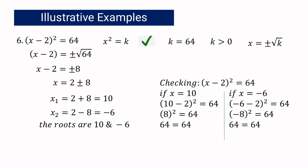Let us check each solution using the original equation, quantity x minus 2 squared equals 64. If x equals 10, then 10 minus 2 is 8, and 8 squared equals 64. If x equals negative 6, then negative 6 minus 2 is negative 8, and negative 8 squared is also 64. It means 10 and negative 6 are both correct.